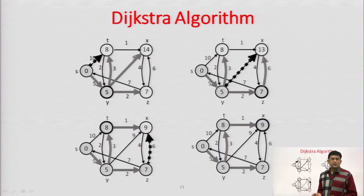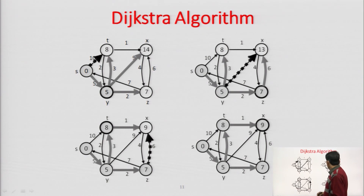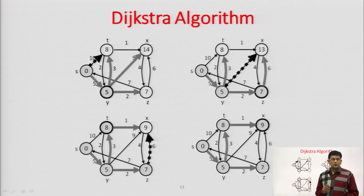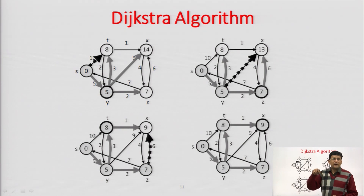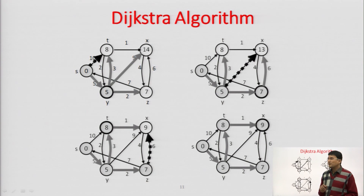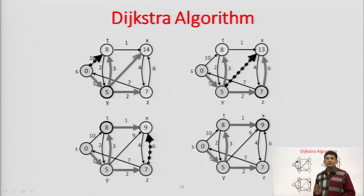The final distances have been updated. The thick edges are actually representing the paths through which we are finding out the shortest paths. Inside the circles we have 0, 8, 5, 7, and 9, which are the shortest distances from the source.